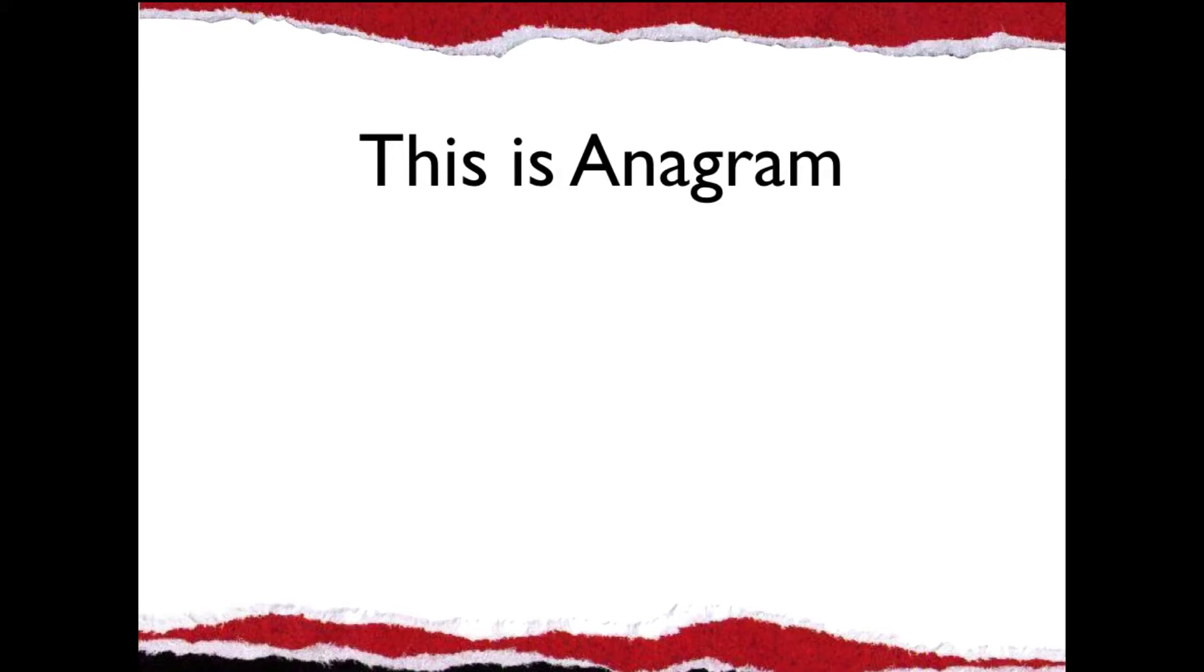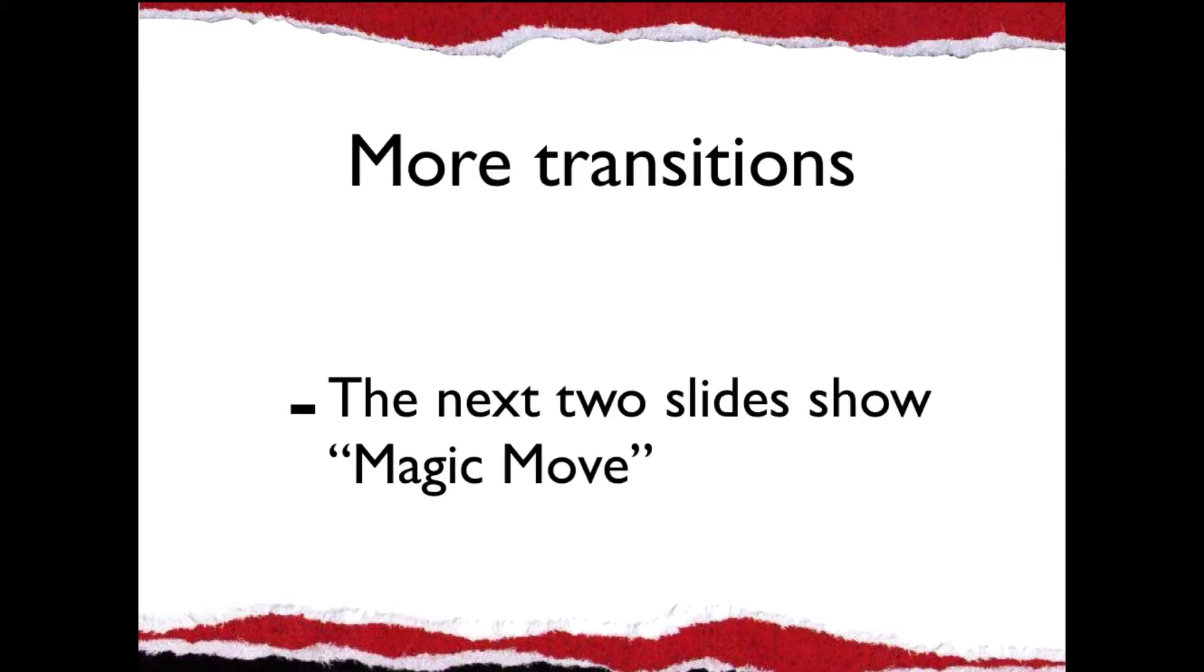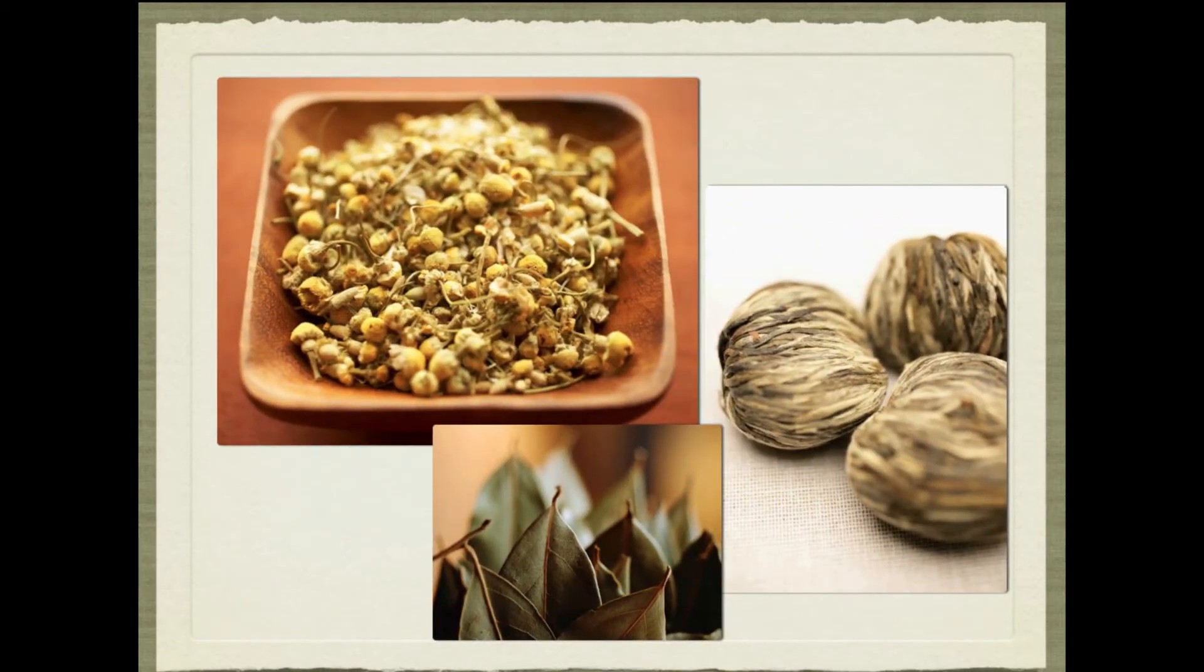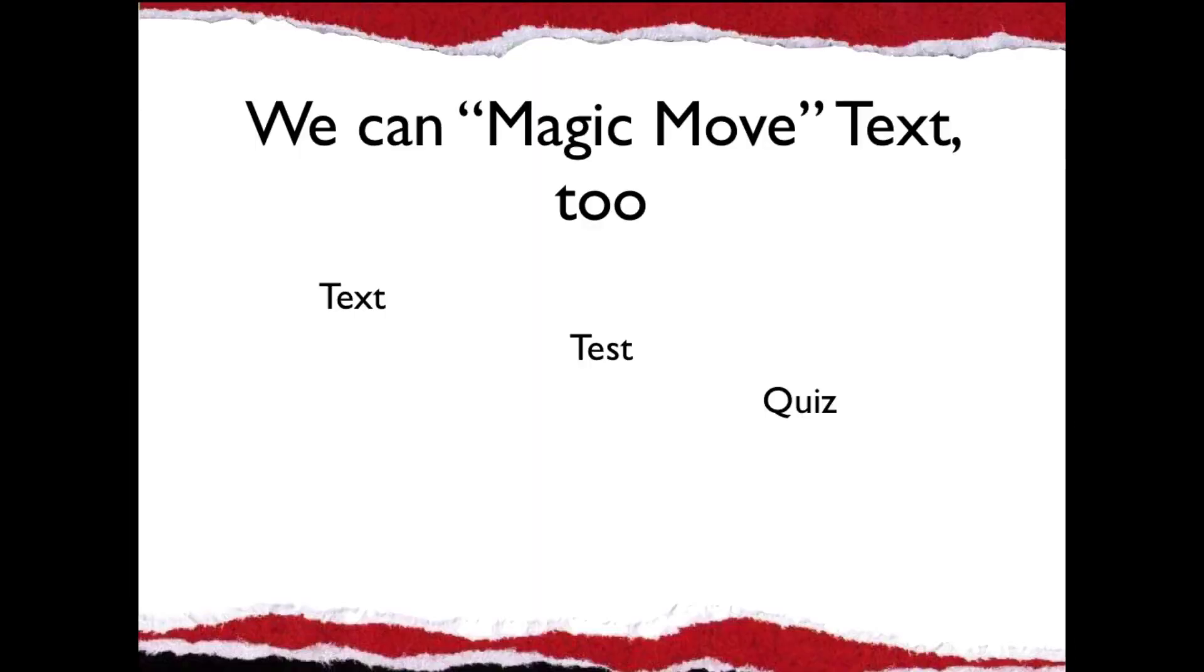Here's the anagram function, which I think is pretty cool. And there are other transitions, including Magic Move, which takes three images or however many and relocates them for you on places that you predetermine. You can use that with text also.